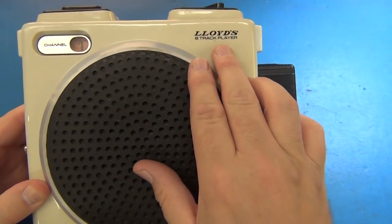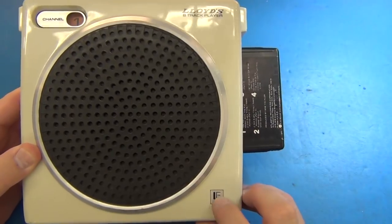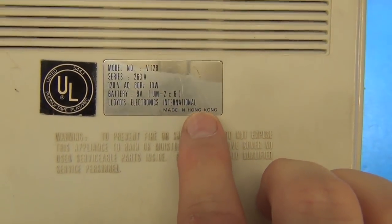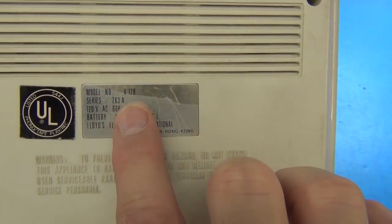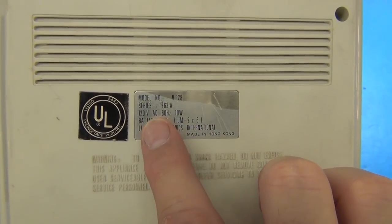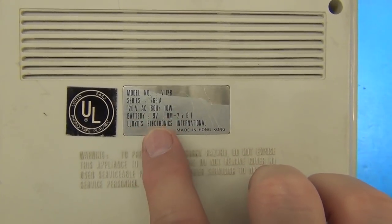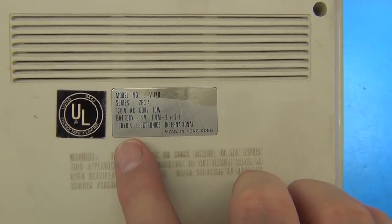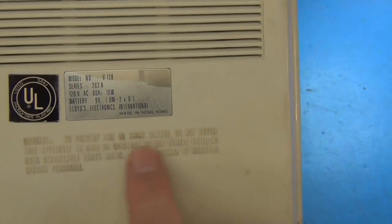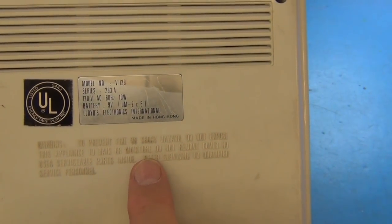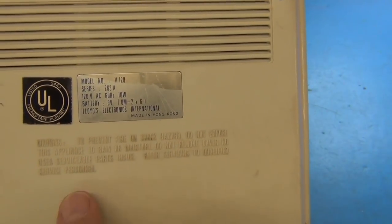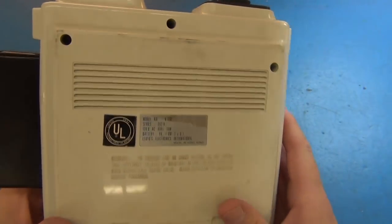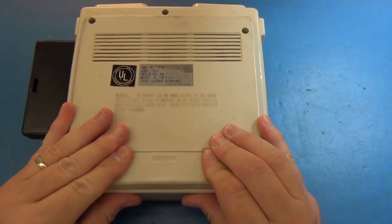Fairly nice looking. It's called Lloyd's, made by Lloyd's Electronics International. This is model number V-128, series 263A. It does 9 volts in or six C cells, C-size batteries, made in Hong Kong. Warning, this is a hazard if it gets wet. Don't get it wet or be around moisture. No serviceable parts, only can be serviced by qualified personnel. Well good, I'm qualified personnel, so let's get into it.